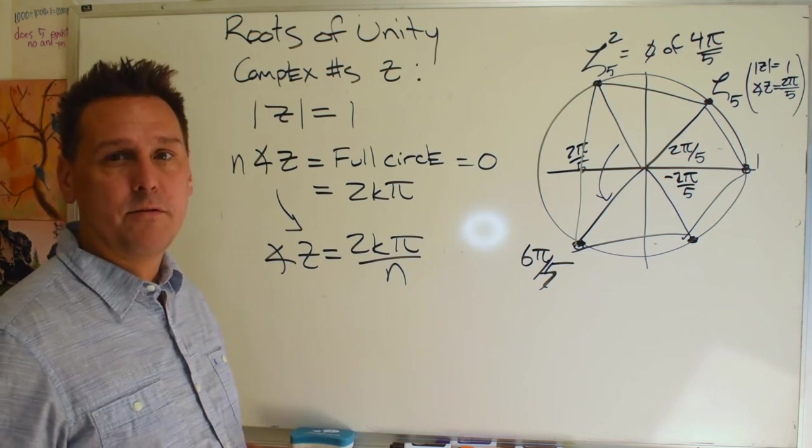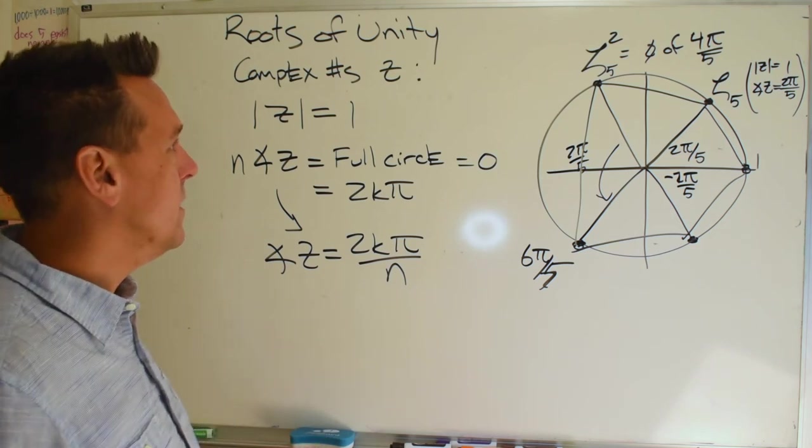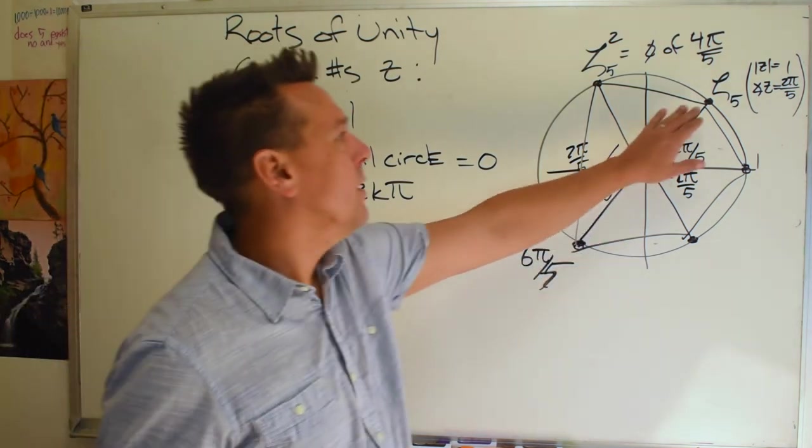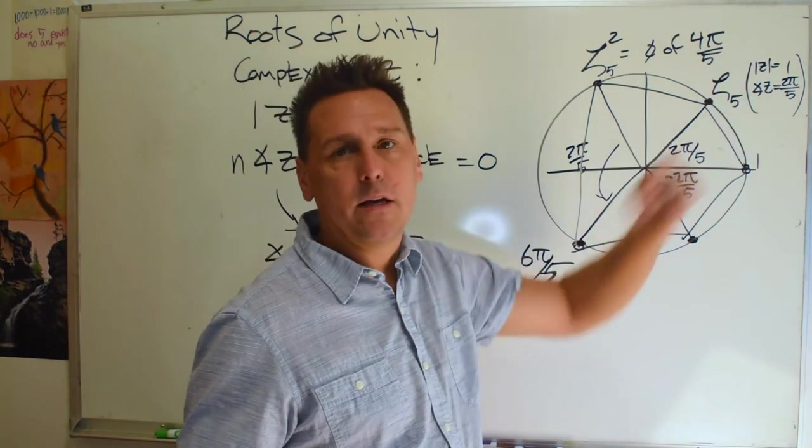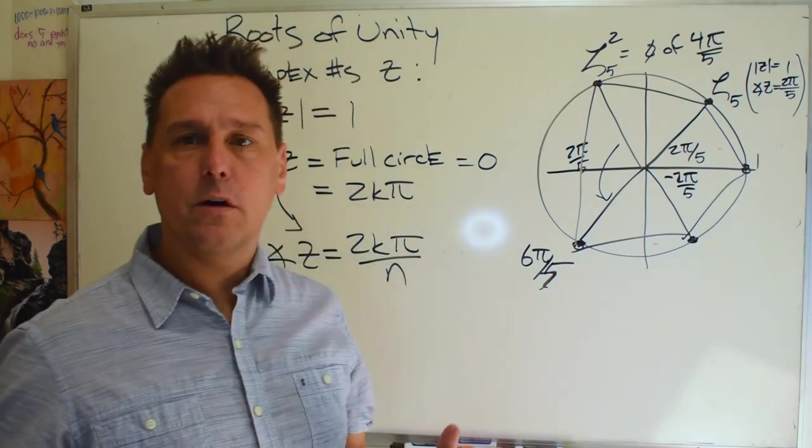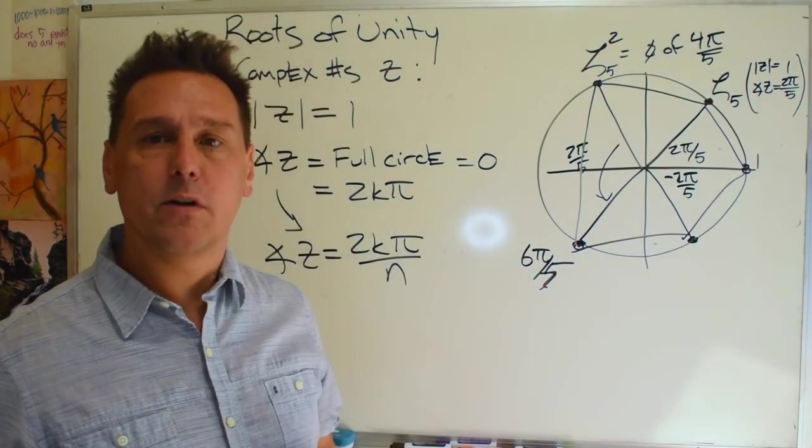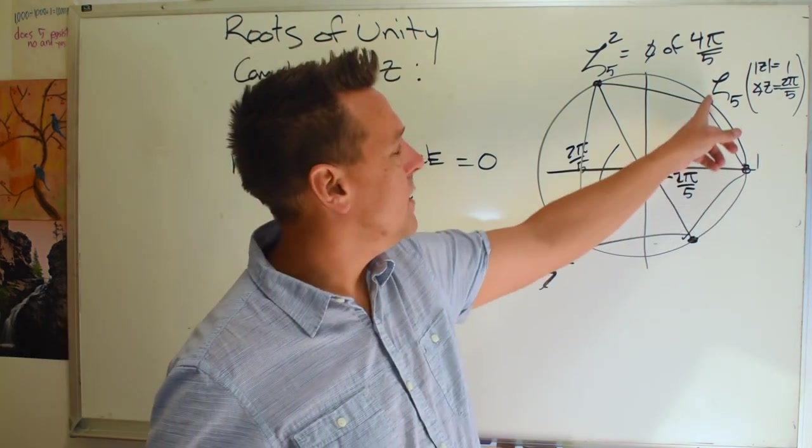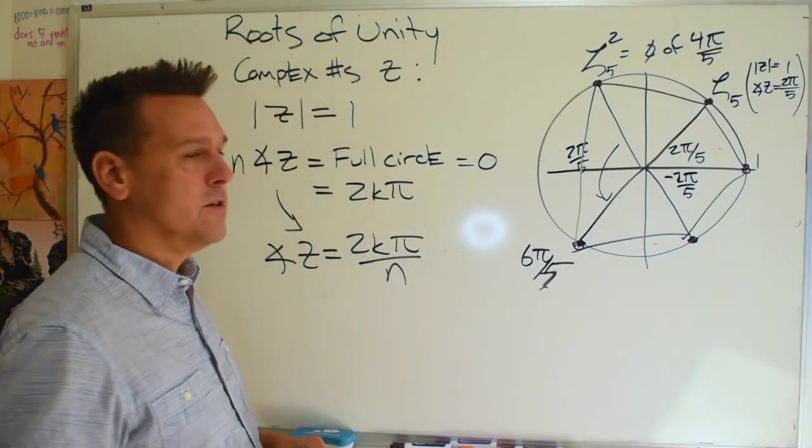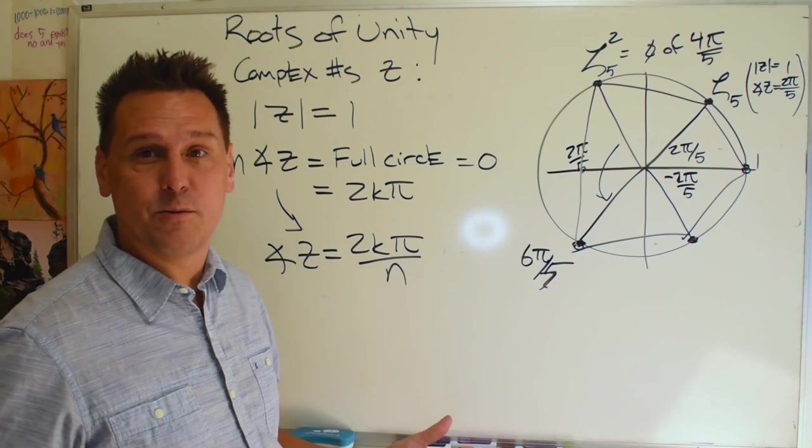Now there's one question that's still left though. And that is, so for this number I know its description in terms of magnitude and its angle. But what if I wanted to know its horizontal and vertical components? What if I wanted to know what's the real part of this number and the imaginary part of that number? And to do that, we'll have to do some extra work.